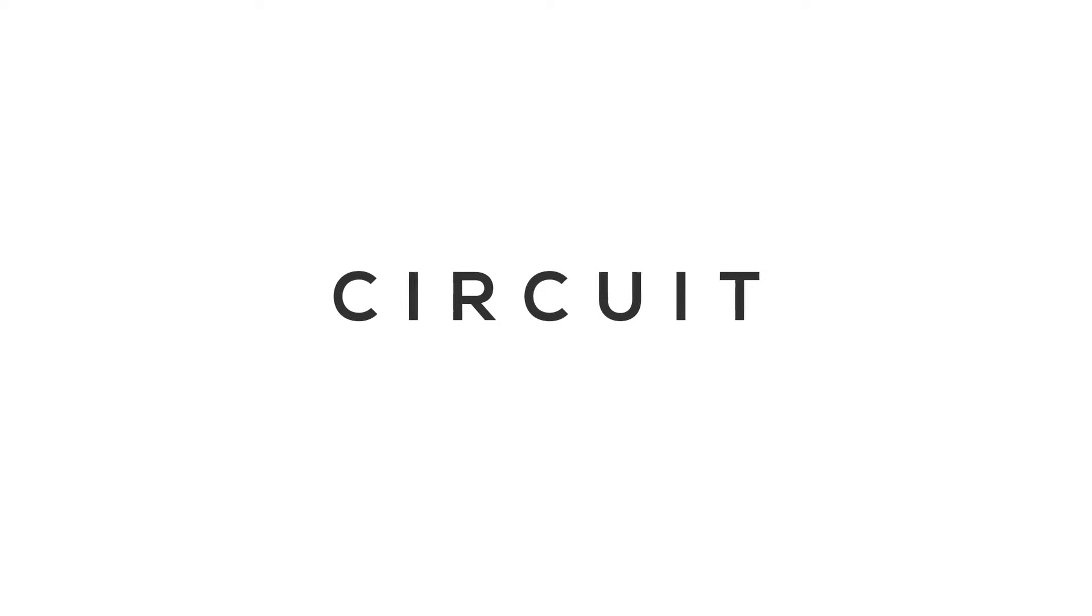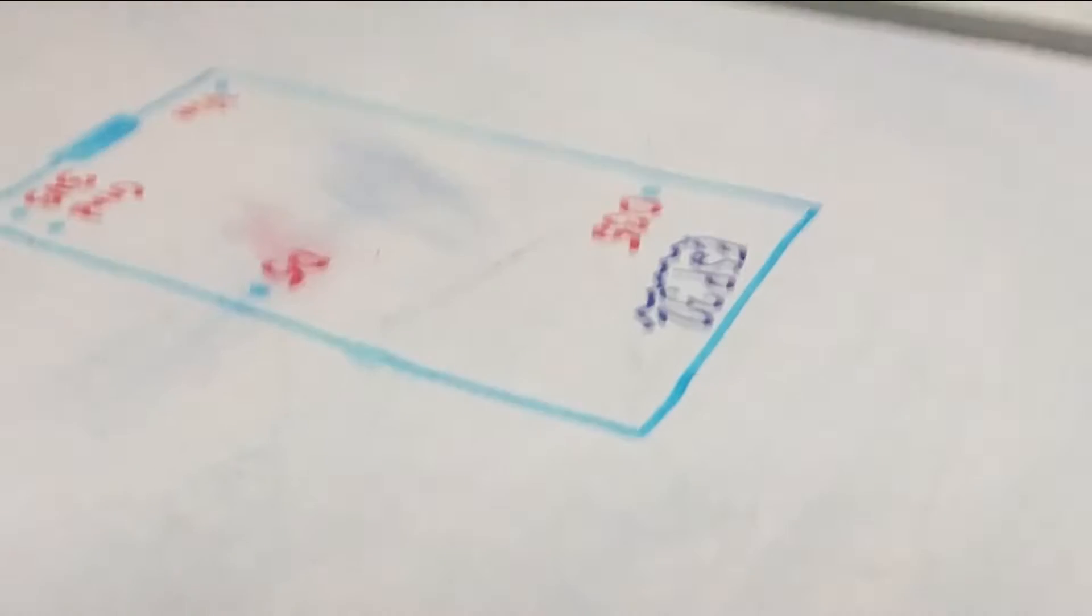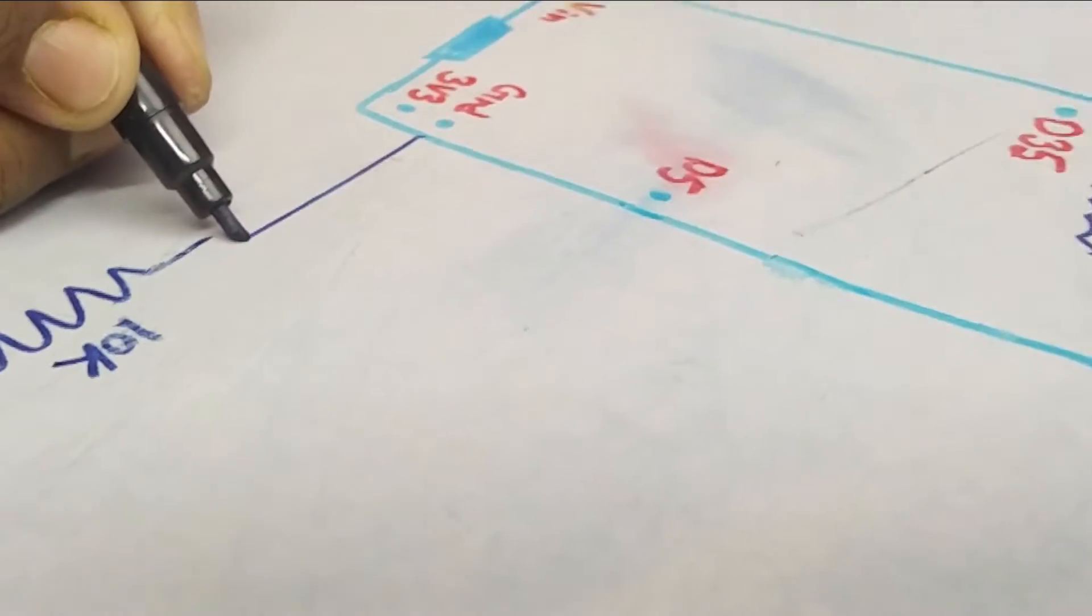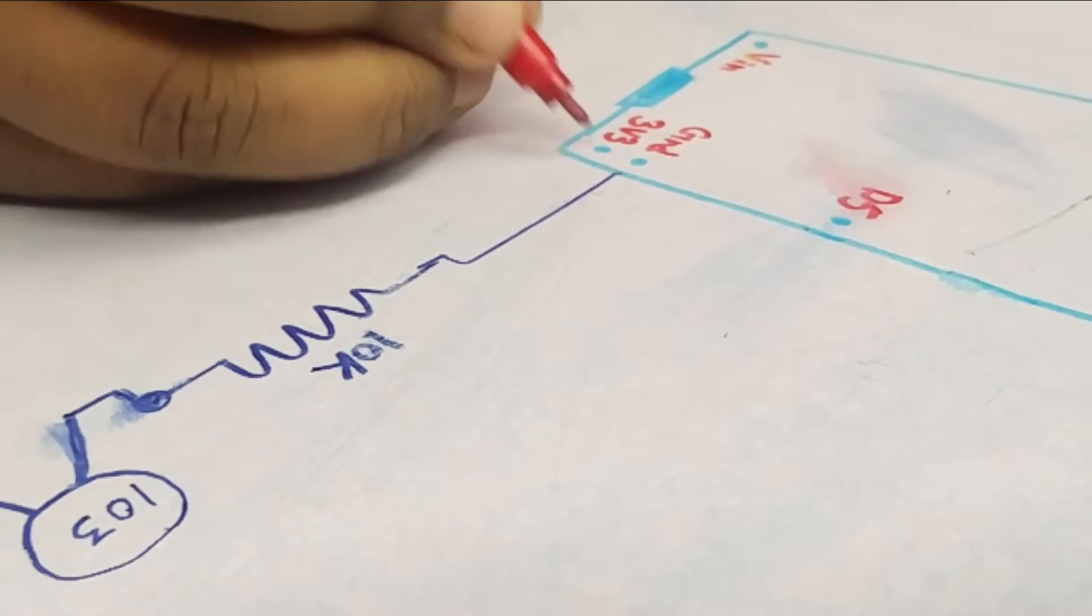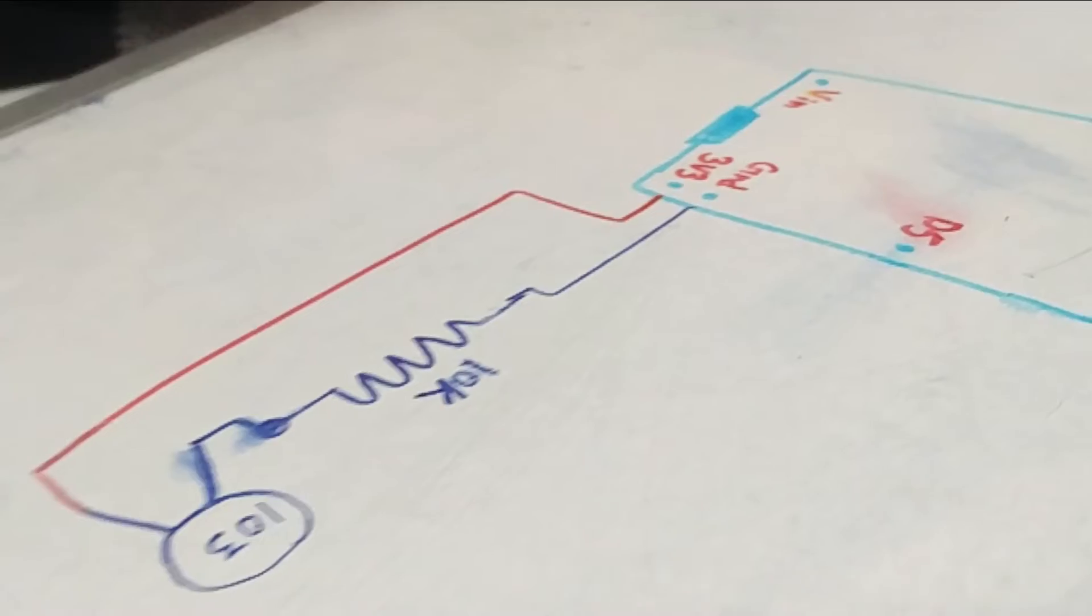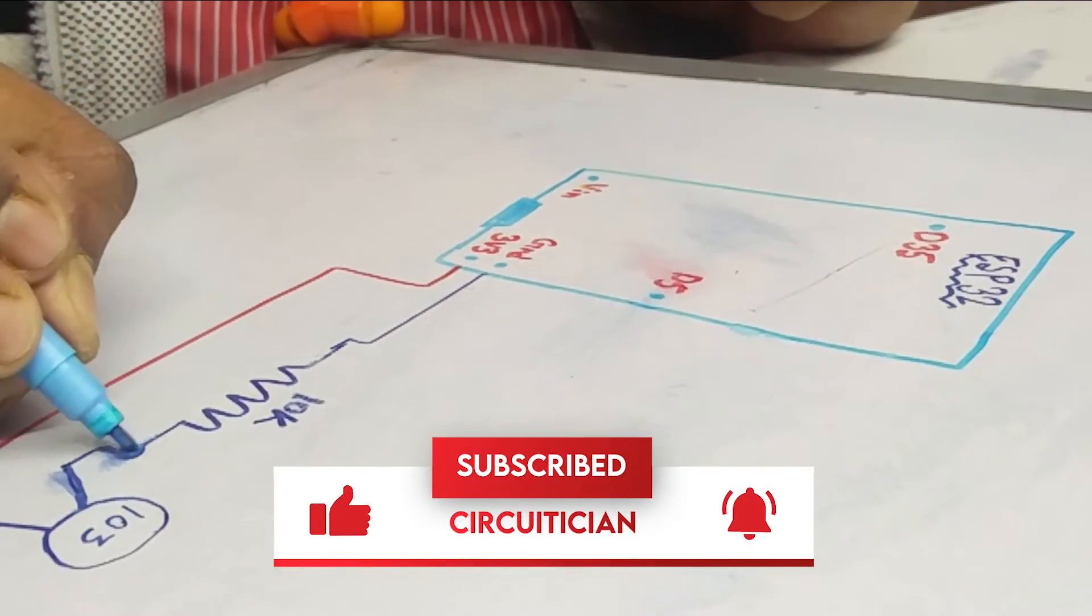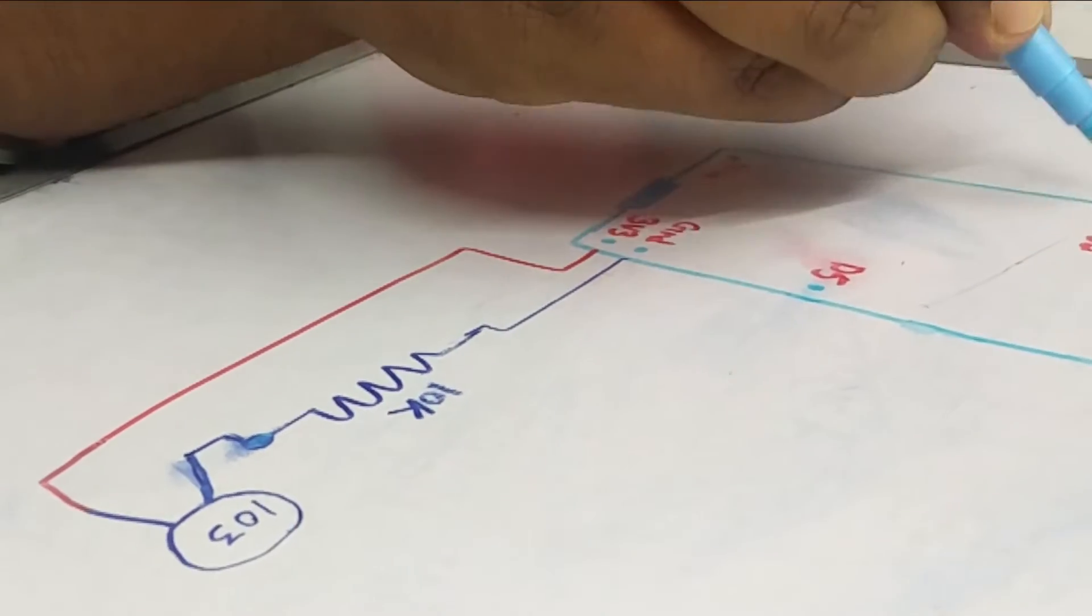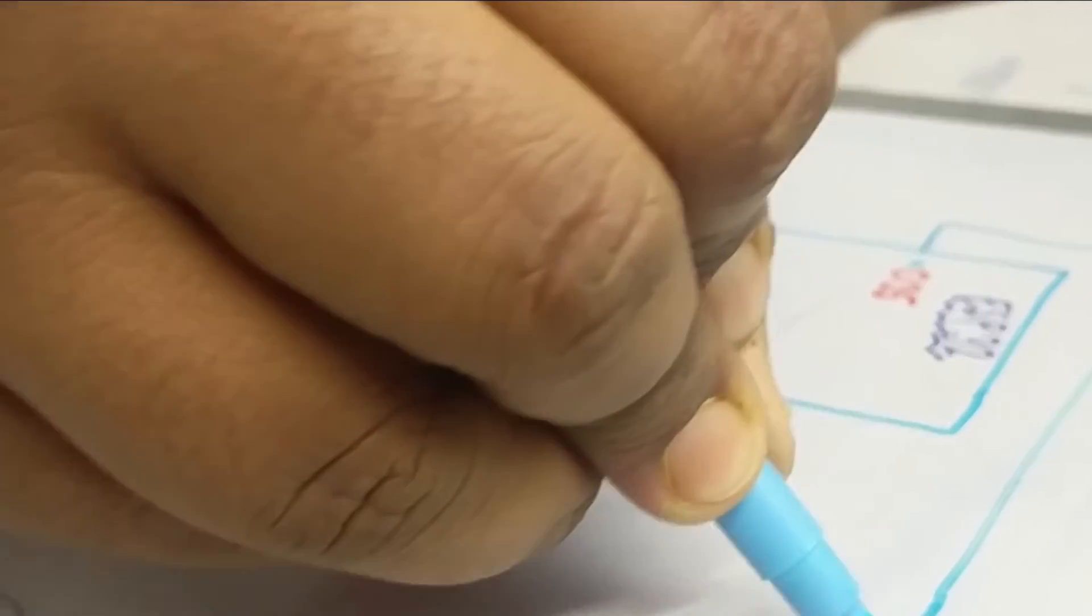Now let's take a look at the circuit diagram. I made a series connection between the thermistor and a 10 kilo ohm resistor. The ground of ESP32 is connected to the free end of the 10 kilo ohm resistor and the 3.3 volt line of ESP32 is connected with the free end of the thermistor. The junction point of the resistor and the thermistor is connected to pin D35 of ESP32.